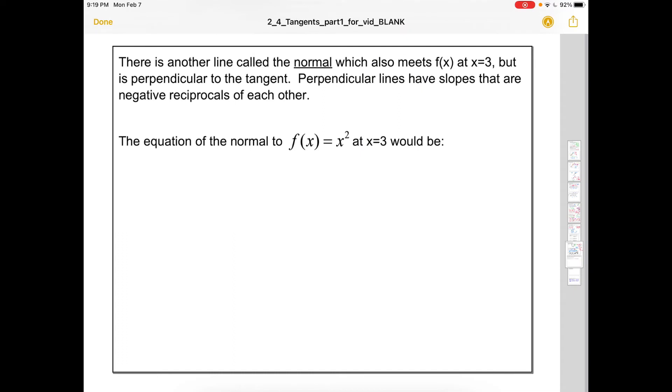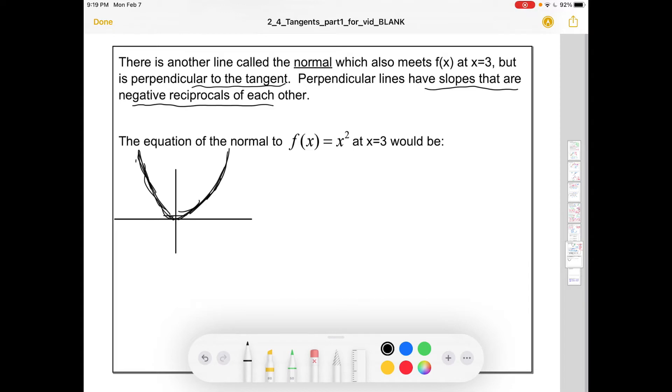There is another line that's called a normal that also meets f of x at x equals 3. So the normal is perpendicular to the tangent. And perpendicular lines have slopes that are negative reciprocals of each other. So I'm just going to draw what I mean here. There's this tangent. The normal would be perpendicular to it. So at a right angle.